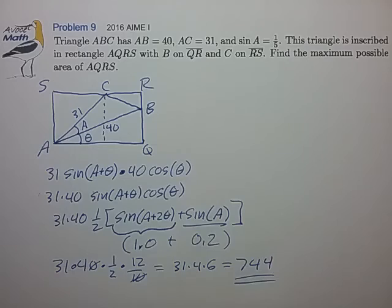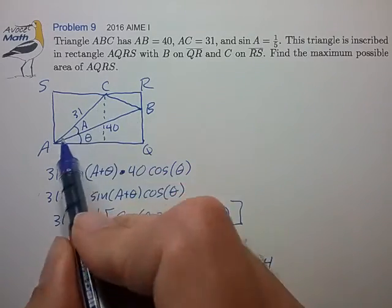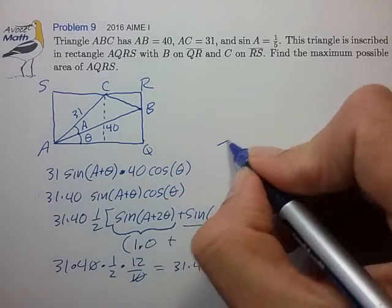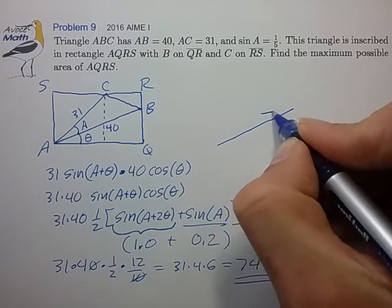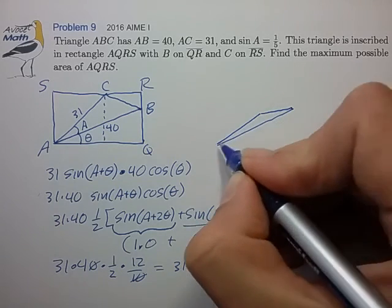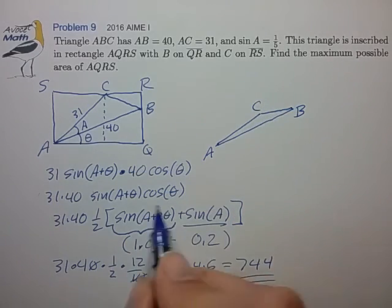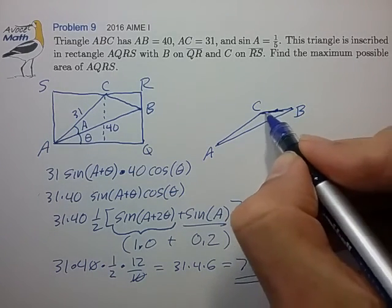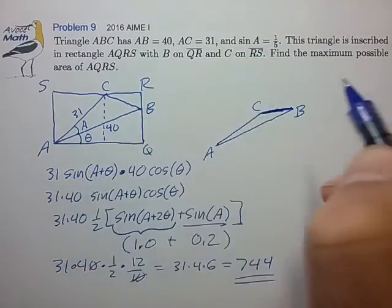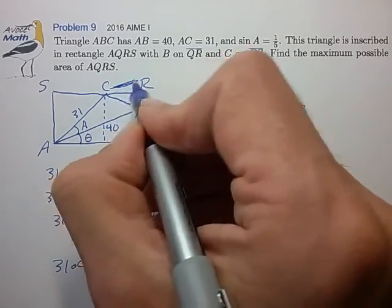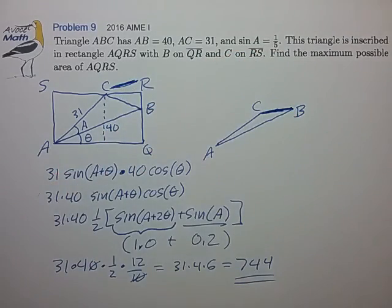Now, the one problem with this is that if you were to actually draw out this triangle correctly, you would find that it's a very skinny triangle. And the angle you're coming up with would basically take side BC and push it out the top, which I don't think is a valid configuration.